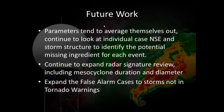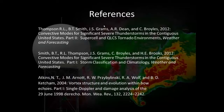For future work: the parameters tend to average themselves out over time, so we'll continue to look at individual cases to see what the missing ingredient may have been. We'll continue to expand our radar signature review, and expand our false alarm cases to storms that didn't have tornado warnings — similar to what SPC has done, perhaps using 2-inch hail or 65-knot winds as criteria. Most references can be found on the SPC page, along with the Atkins et al. paper and others that still work well today, especially for QLCS situations.